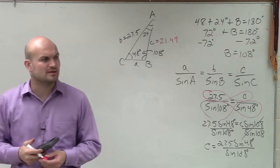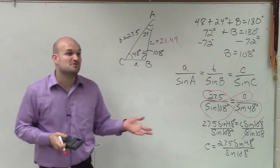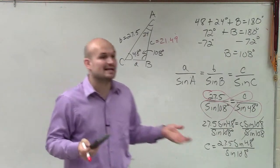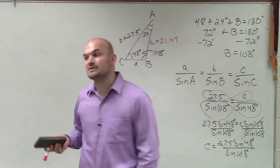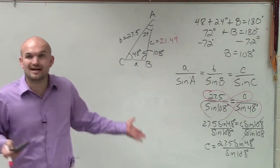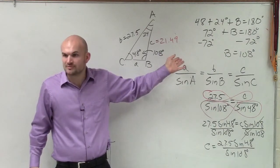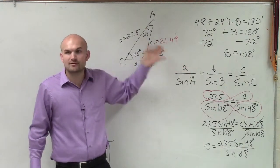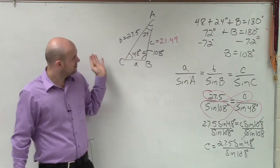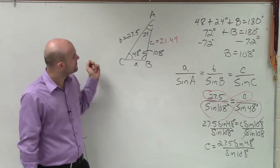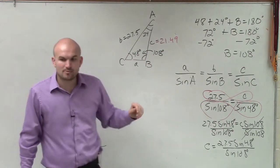And always make sure, guys, when you're plugging those values in, sometimes you might actually have your calculator in radians, or you accidentally typed in the wrong number, and you might get a value that's not going to make sense. If you had a side length that was like 2,000, you know you did something wrong. But does this look like that would fit for that triangle? Yes? Yes, it does. So that one's 21.49, and now we need to solve for A.